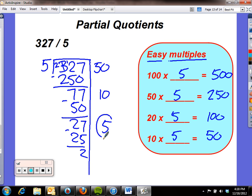So this is part of my quotient, part of my answer. This is part of my quotient, and this is part of my quotient. I just have to add those: 50 and 10 is 60, plus 5 is 65, and then I have a remainder of 2. That's it.